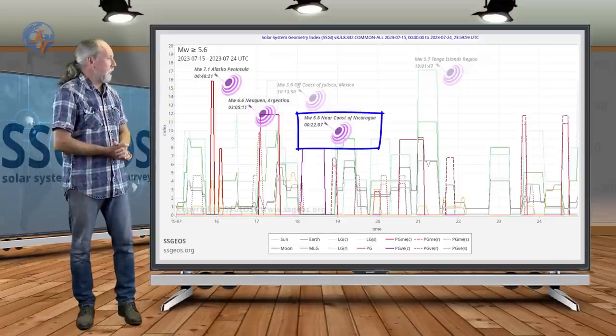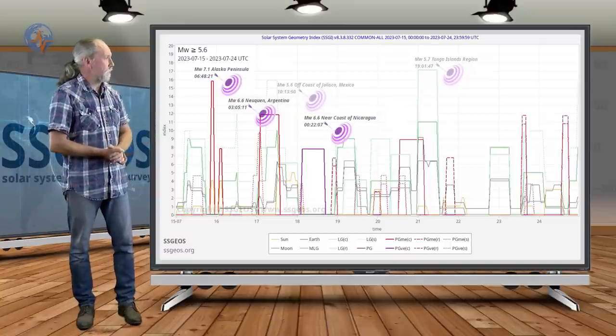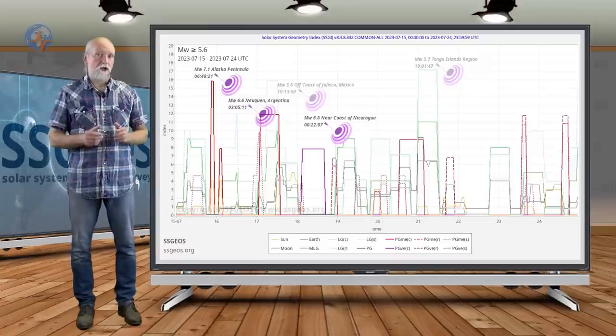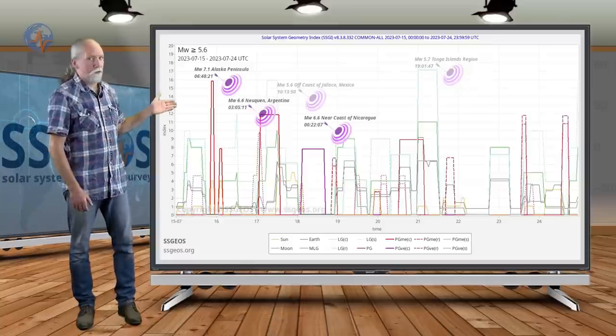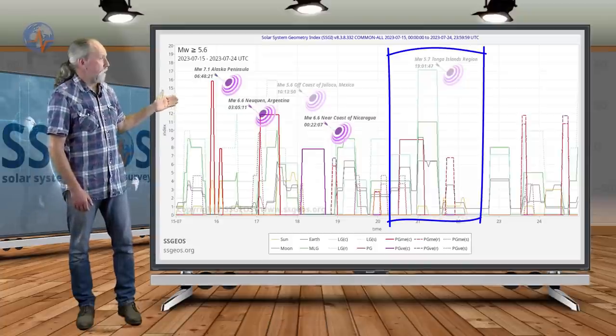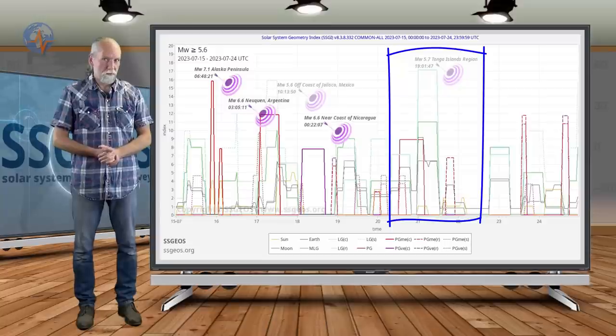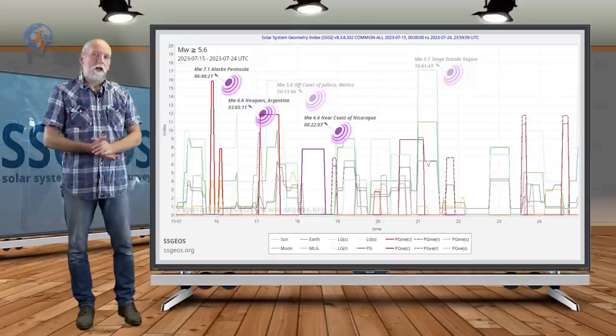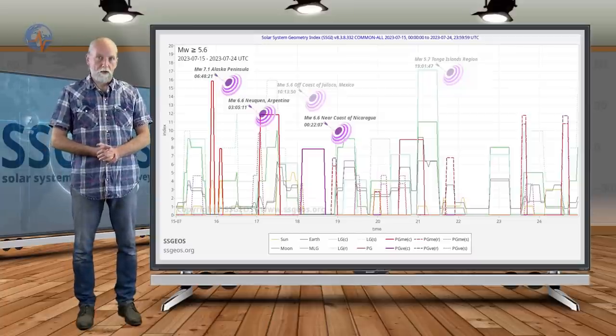That was on the 18th, also a 6.6 near the coast of Nicaragua, Central America. In between, a 5.6 off the coast of Jalisco, Mexico. If we look at the 20th, that was the planetary conjunction also with Earth, followed by a high lunar peak, and we had a 5.7 at Tonga Islands. So again we see an obvious correlation, a relationship between increased seismic activity and critical planetary geometry.